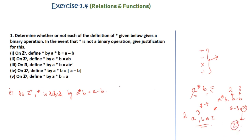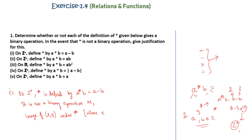This exceeds our limit for the domain, so this is not a binary operation. We write: the image of (x, y) under star, where x, y belong to z+ and x < y, gives x★y = x − y, which is less than 0 because x is less than y. This does not belong to z+, so it is clearly not a binary operation.